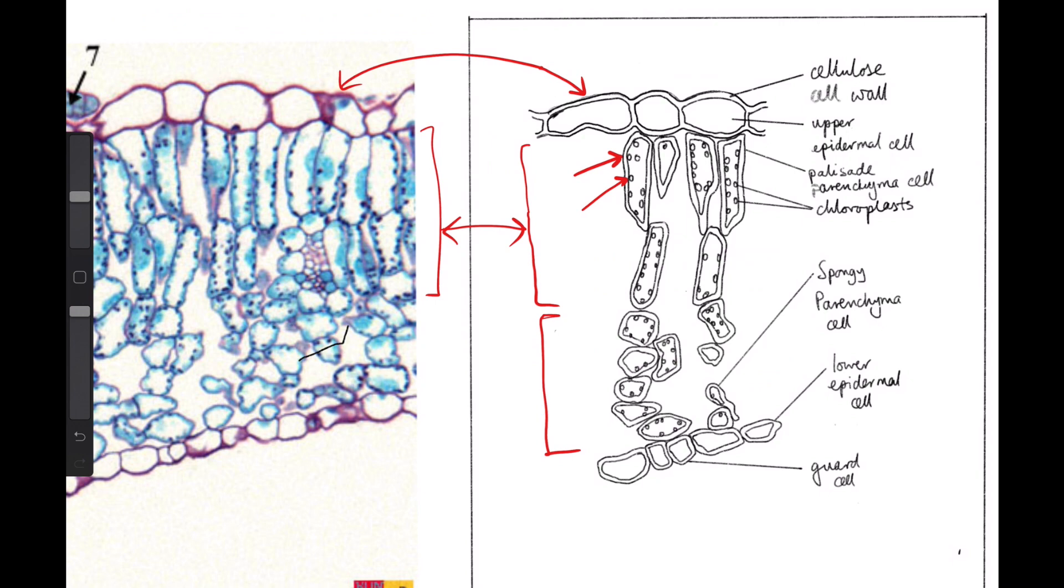Okay, so we have the spongy parenchyma cells there. And we have our lower epidermal cells here. Okay, so that's the main things that I wanted to highlight with regards to the labeling.